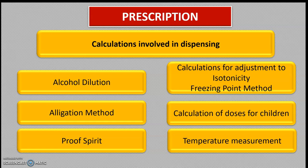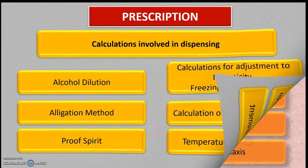The next important point is calculations involved in dispensing. The key calculations from an exam point of view are: alcohol dilution, the allegation method, proof spirit calculation, and calculations for adjustment to isotonicity — in which the freezing point method is very important. You should also know what isotonic, hypotonic, and hypertonic solutions are. Additionally, calculation of doses for children using Young's rule, Dilling's rule, and Fried's formula is important, as well as temperature measurement calculations.